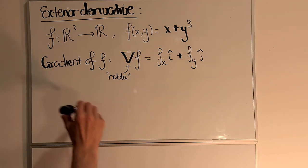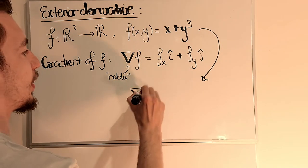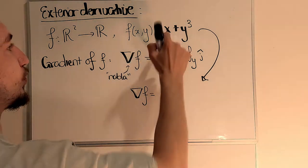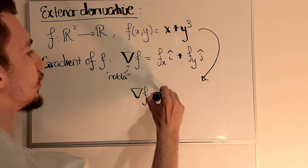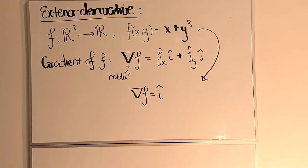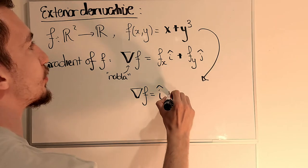Okay, so in our specific case, what we see is that ∇f is just going to be, well, the x partial derivative of x + y³ is 1, so I have just i hat, and the y partial derivative, that's just 3y²,